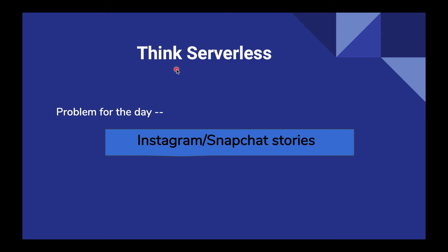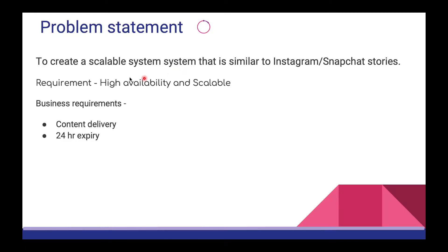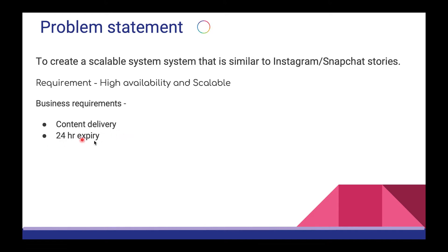Hi guys, Tejas from BreakingCode. This is my new series Think Serverless and the problem for the day is Instagram/Snapchat Stories. The problem statement is we need to create a scalable system which would support the feature of Instagram and Snapchat Stories. The system needs to be highly available and scalable. The two major things we are going to focus on are content delivery and the 24-hour expiry. Content delivery is basically how we load the timeline, and 24-hour expiry means we need to expire the stories in 24 hours.